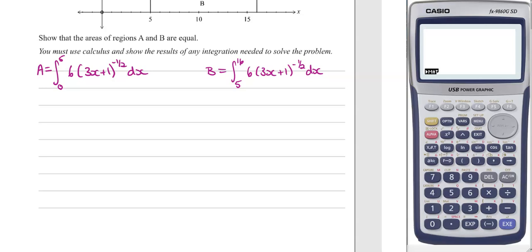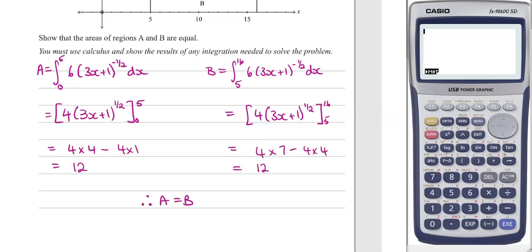Now we need to work through those integrations and show that they are equal. To integrate this thing, we'll do 3x plus 1, reverse chain. We'll increase the power by 1 to the half. Then divide by 1 half and divide by the 3. So 6 divided by 3 is 2, 2 divided by 1 half would be 4. Then substitute those values in. And we get that they're both equal to 12.